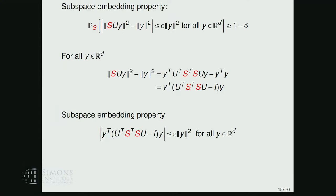The subspace embedding property says that with high probability over S, the sketching matrix, it must be the case that for any vector of coefficients Y on the basis, the Euclidean norm of the sketched version S·U·Y is close to the Euclidean norm of the non-sketched version—and since U is a basis, that's just the Euclidean norm of Y itself.